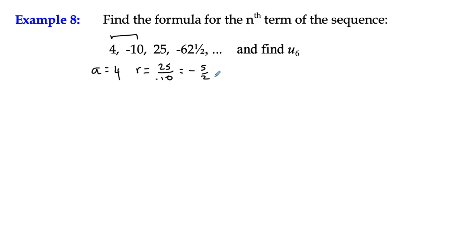You could use 2.5. It just depends if it's going to end up as a calculator question or not. So the ratio is negative 2.5. So what we're going to do here, we need to find the formula for the nth term.